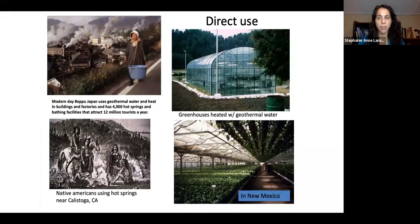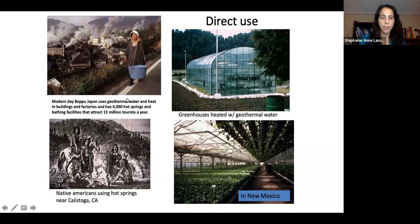Other direct uses—not producing electricity but using heat directly: in Japan, we have geothermal water and heat in buildings from springs used every year. We've been using it directly for a long time in the U.S. We have greenhouses heated with geothermal water, including one in New Mexico that's heated geothermally 24 hours a day.